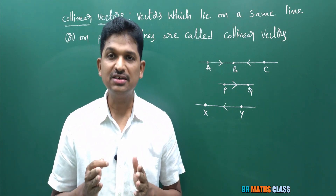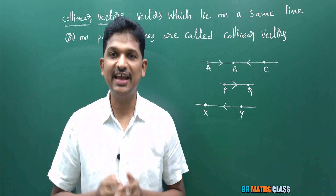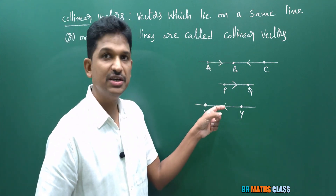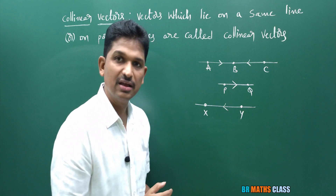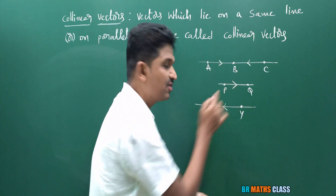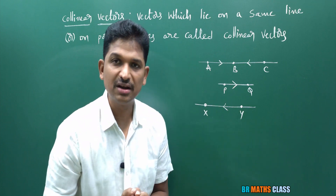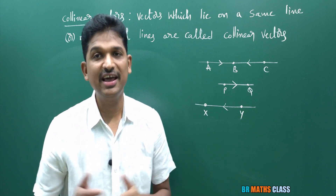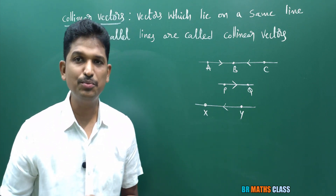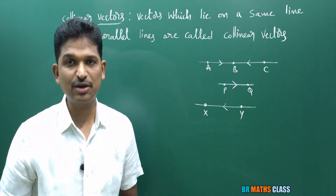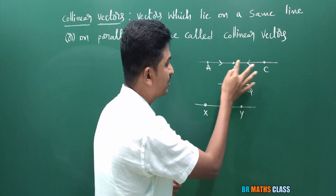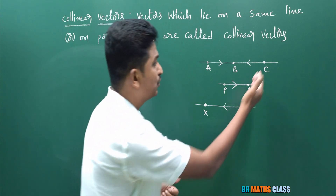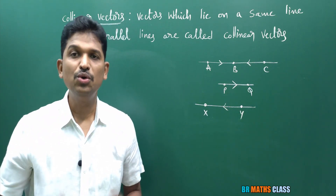Now we will learn about like vectors and unlike vectors. Vectors which are in the same direction are known as like vectors. For example, AB bar directed from A to B and PQ bar directed from P to Q — they are in the same direction, so AB bar and PQ bar are like vectors. Also, CB bar and YX bar are in the same direction, so CB bar and YX bar are also like vectors.